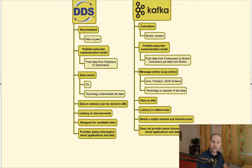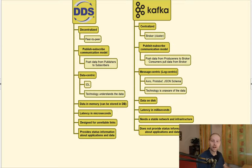The latency of DDS is counted in microseconds, but Kafka counts latency in milliseconds. So if you need latency in microseconds, you should look at DDS. DDS is also designed for unreliable links — it provides reliable communication even over unreliable links and can recover from packet loss or latency issues. On the other hand, Kafka needs reliable communication and infrastructure to function well.